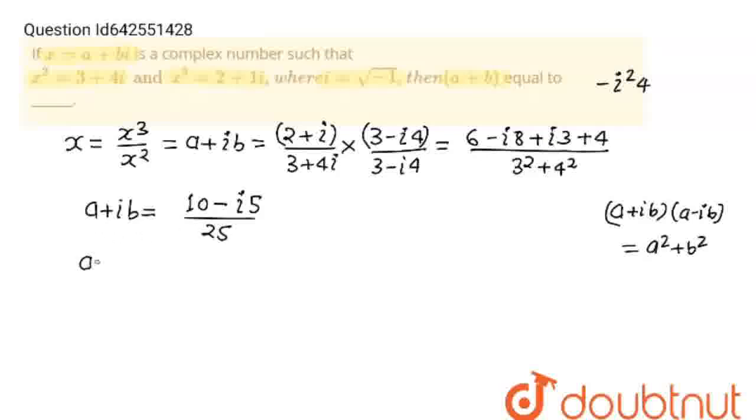So from here we'll get value of a is equal to 10 upon 25 and value of b is equal to minus 5 upon 25. So a plus b will be equals to denominator 25 will become as it is and in numerator there will be 10 minus 5 is equal to 1 upon 5 is our final answer.